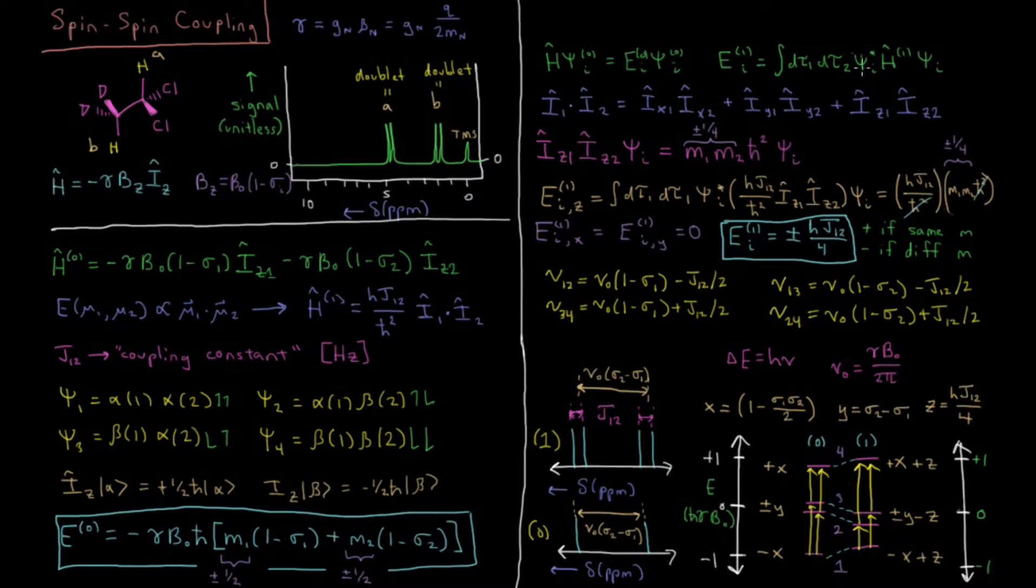So now our H1 has this constant out in front, and then there's two operators dotted with one another. So we have i1 dot i2, and we know that that's equal to ix1 times ix2 plus iy1 times iy2 plus iz1 times iz2. It's just the sum of the product of each of the three Cartesian directions for those operators.